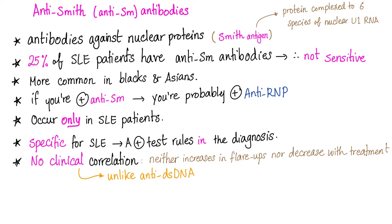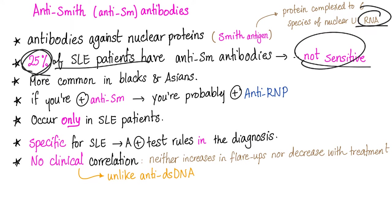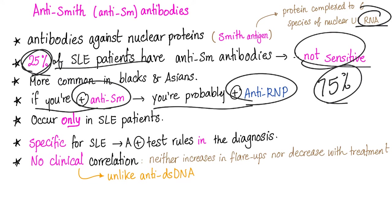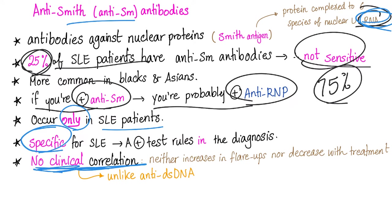Anti-Smith autoantibodies are against the Smith protein — a protein complex of six species of nuclear RNP, meaning it's against the RNA. Only 25% of lupus patients have anti-Smith antibodies, so by definition it's not sensitive. If you are anti-Smith positive, you are probably also anti-RNP positive, because both are antibodies against RNA. Anti-Smith occurs only in lupus patients, making it very specific for lupus, but it does not correlate with disease severity or symptoms.